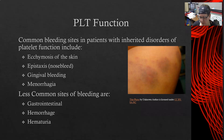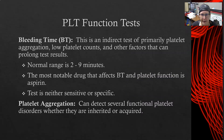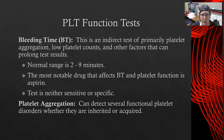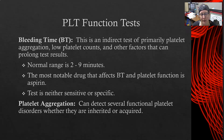There are two platelet function tests: the bleeding time and the platelet aggregation test. The bleeding time is an indirect test of primary platelet aggregation. It is affected by low platelet counts and other factors that can prolong test results. The normal bleeding time range is 2 to 9 minutes. The most notable drug affecting bleeding time is aspirin, though ibuprofen can also affect it. This test is neither sensitive nor specific, is highly dependent on the technique of the person performing it, and is considered outdated due to inconsistent results.